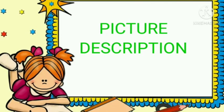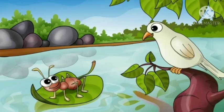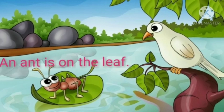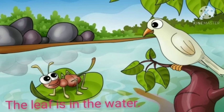Let's practice a simple picture description for beginners. Have a look at this picture. A dove is on the tree. An ant is on the leaf. The leaf is in the water.